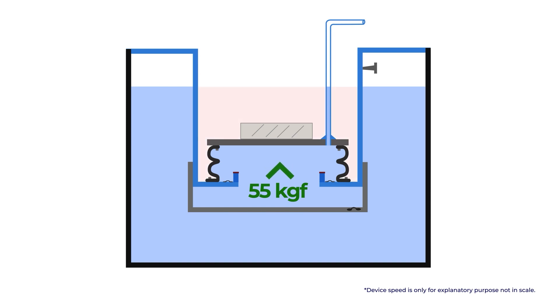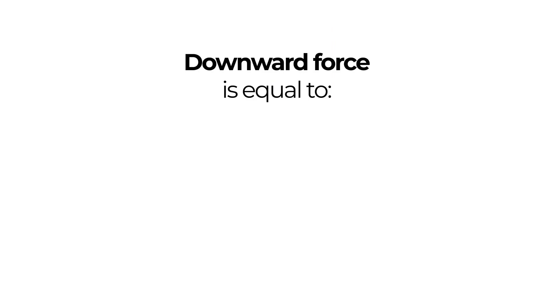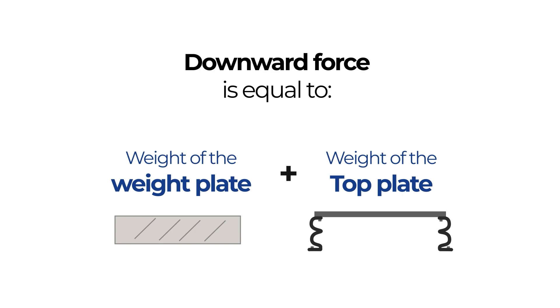To increase buoyant force, laterally we just need to increase the displacement of the water above the top plate. Downward force is the total weights of the weight plate and top plate, etc.